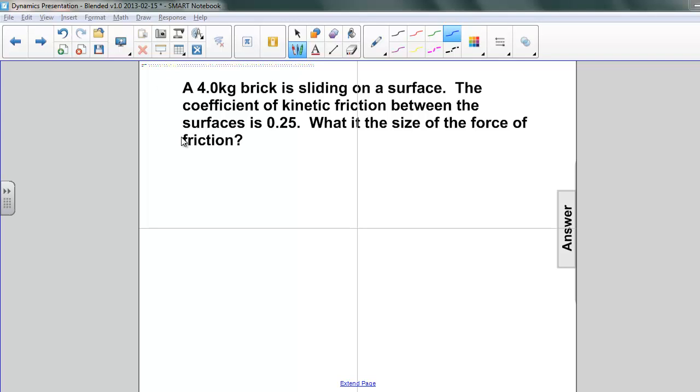Let's try an example. Here a 4 kilogram brick is sliding on a surface. The coefficient of kinetic friction between the surfaces is 0.25. What is the size of the force of friction?